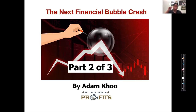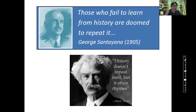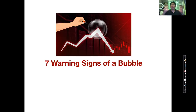Welcome to part two of this video. If you have not watched part one, pause and go watch part one first. In part one, we studied history to look for patterns. History doesn't always repeat exactly, but it often rhymes, and if you fail to learn from history you're doomed to repeat it. Looking at all the past bubbles and crashes — the dot-com crash, the financial crisis, the tulip mania — it's basically the same movie again and again with different actors. So after studying all these past bubbles and crashes, we can observe seven warning signs of a bubble.